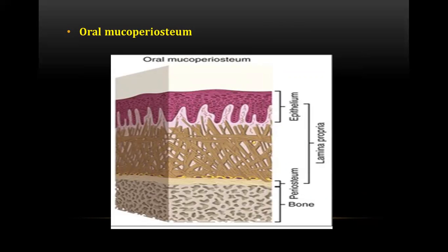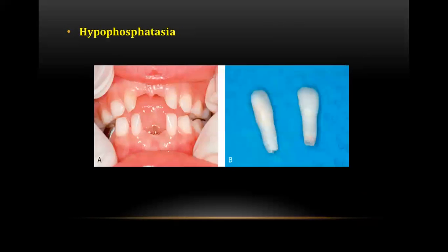The next question was about oral mucoperiosteum. A diagram of mucoperiosteum was given in the examination. This diagram contains bone, periosteum, and epithelium, which together form the oral mucoperiosteum. The epithelium and periosteum together form the lamina propria.